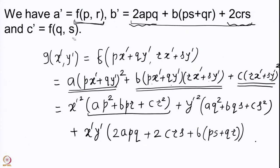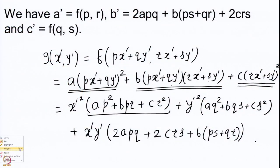What we have done is obtain the description for the coefficients of the equivalent form in terms of the earlier coefficients and the integers in the change of variables. The key things to remember: A' is the earlier form evaluated on (P, R), and C' is the form F evaluated on (Q, S). The formula for B' is slightly more complicated, but we will handle it in a different way later.